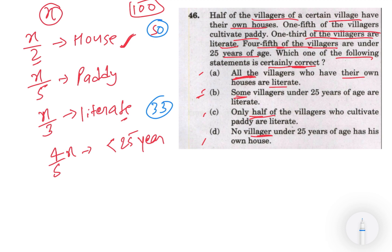So may be possible hai kya - question kya hai: all the villagers who have their own house are literate. So yeh pachas ke pachas literate hai - aisa possible nahi hai, ki agar pachas bhi, woh bhi yeh 33 me ho sakte hai. Toh pehla toh hum certainly nahi bol sakte.